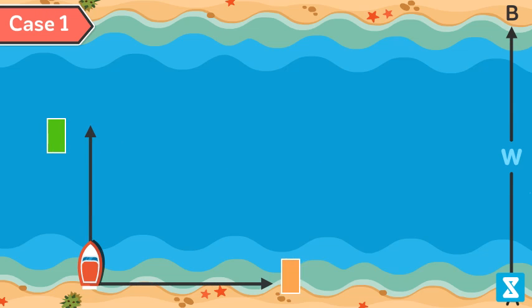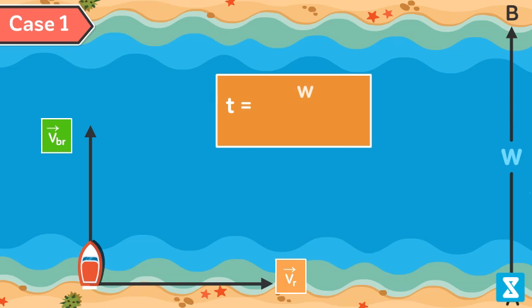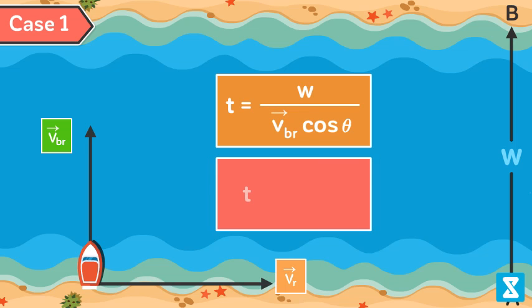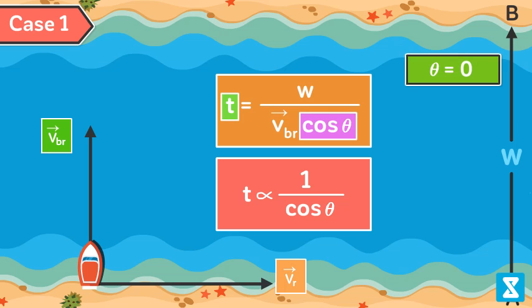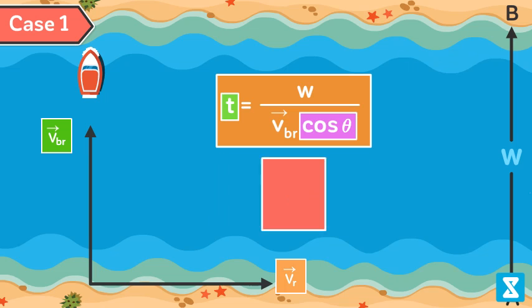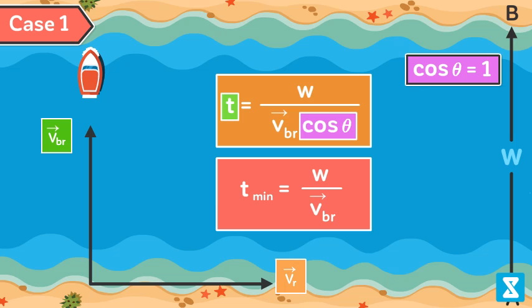As calculated above, time taken to cross the river is given by the relation T equal to W divided by VBR cos theta. As T is inversely proportional to cos theta, time will be minimum when cos theta is maximum, which is possible when angle theta is zero, which means the boatman should steer his boat perpendicular to the river current. Hence T minimum is equal to W divided by VBR, as cos theta equals 1.